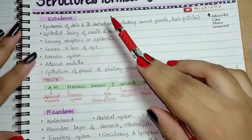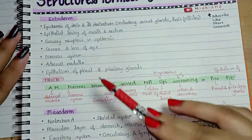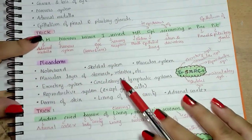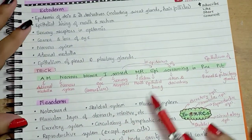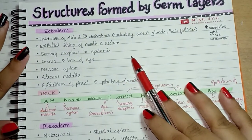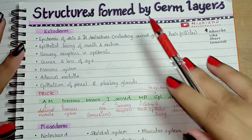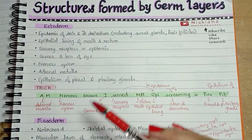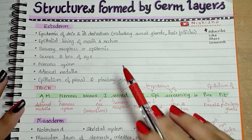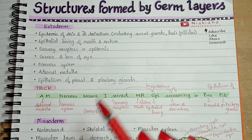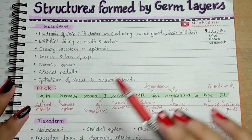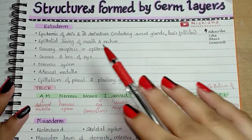So there are three germ layers: ectoderm, mesoderm, and endoderm. In this tricks video, we will be looking at the structures formed by germ layers. You need not learn the trick by heart — just learn it if you want to. It's not compulsory that you have to learn the tricks for this.